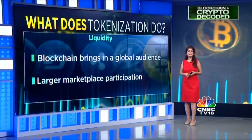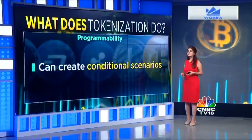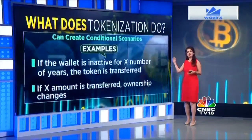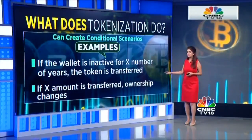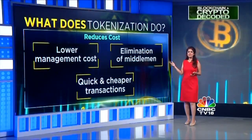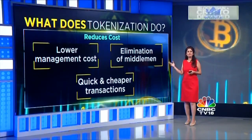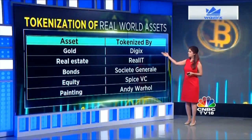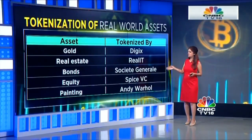You can create conditional scenarios as well — for example, an inactive wallet for a certain number of years may lead to token transfers to another person, and a certain amount of token transfer may lead to an ownership exchange. It also reduces cost, eliminates middlemen, and there is no management cost. Examples of what has been tokenized so far include gold, real estate, bonds, equity, and paintings — the world is tokenizing it all.